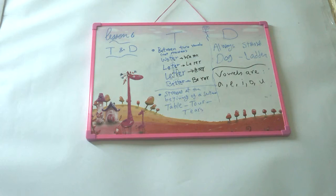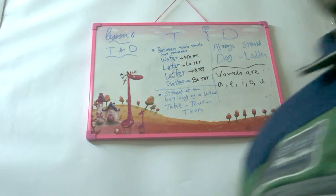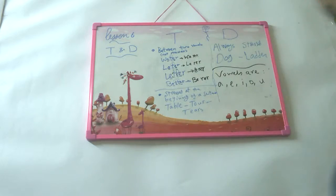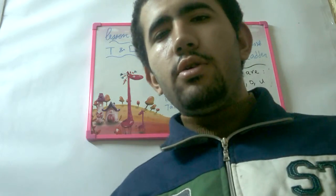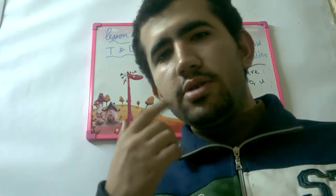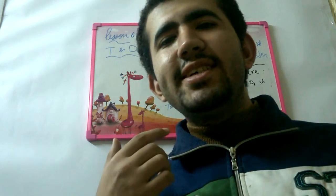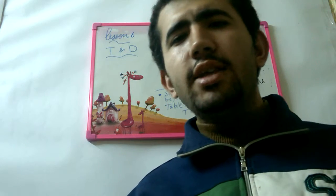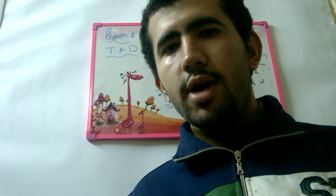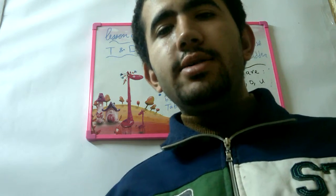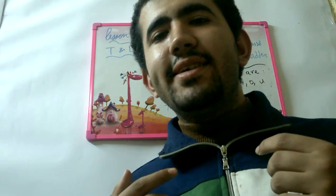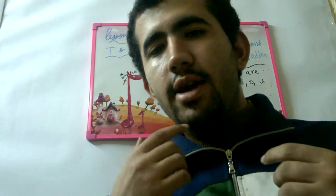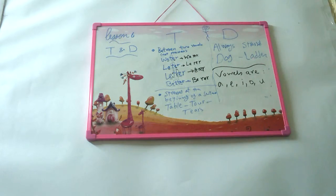Hello everyone in the world, how are you doing today? It's me Zaki. Today I'm going to talk about the differences between T and D. Your mouth shape for T is like that — T. It's not voiced. For D, your mouth is like that — D — and D is voiced.